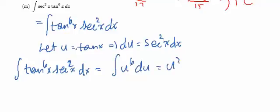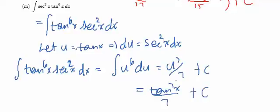That's u to the 7th over 7 plus c, or tan to the 7th x over 7 plus c. And that's it, we're done.